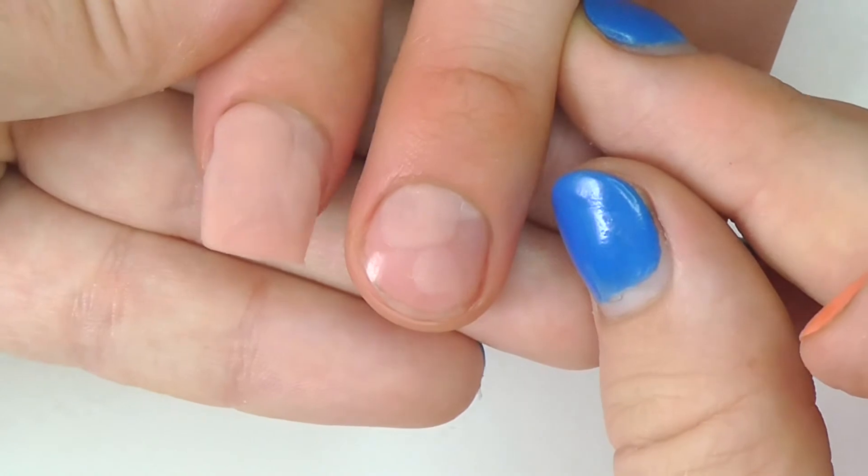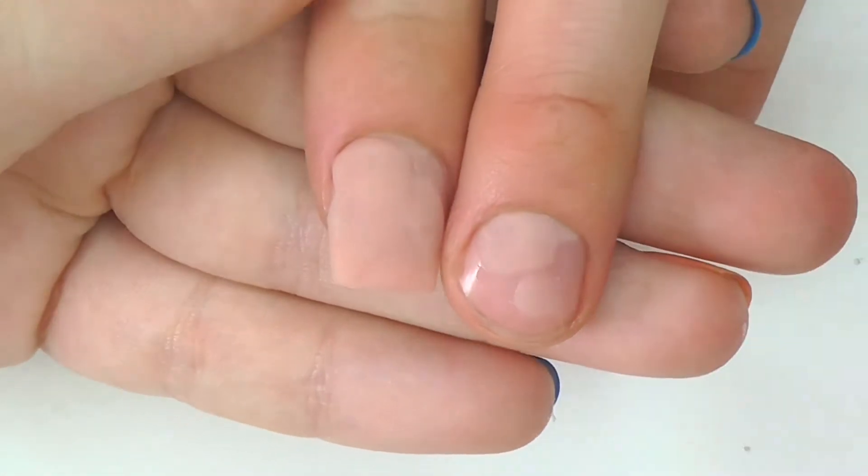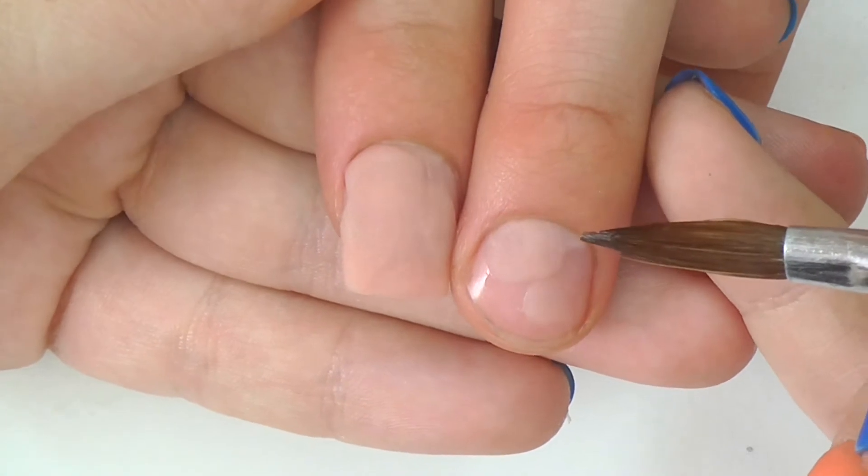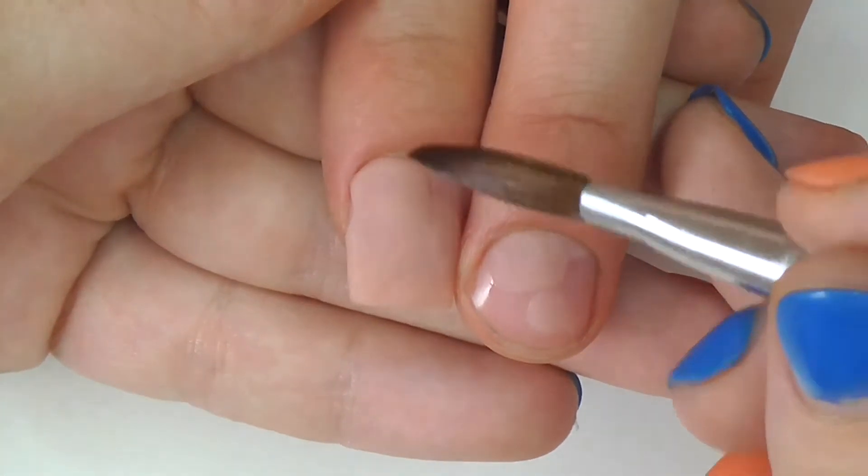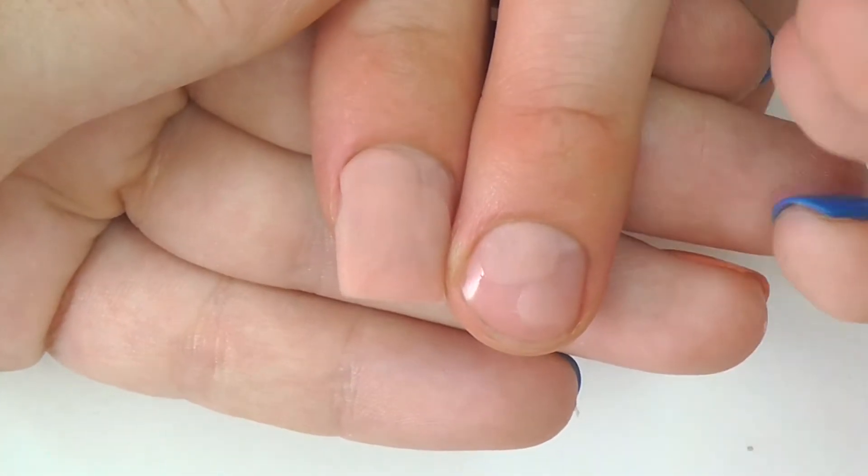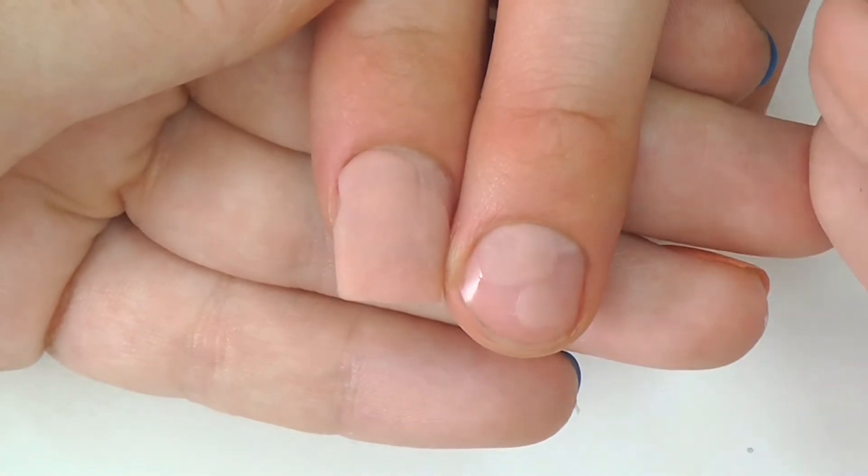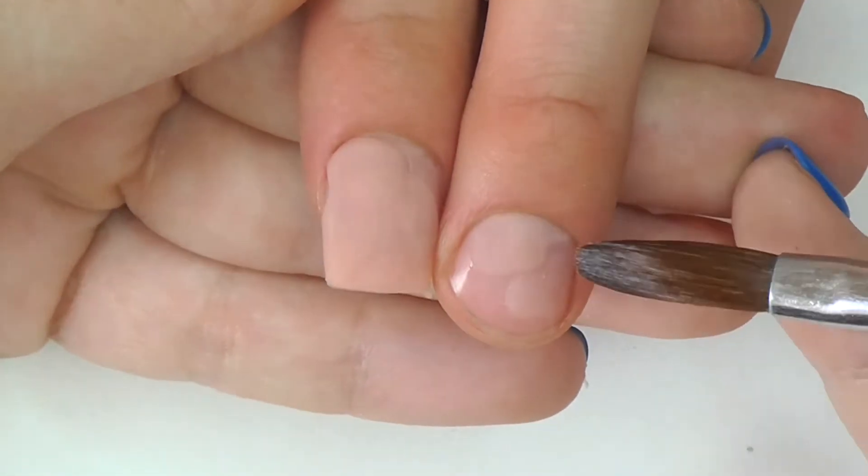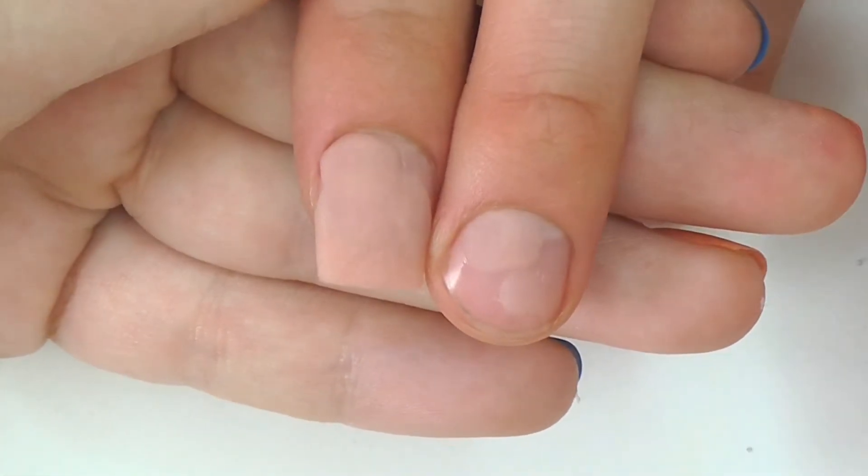So why is having flooding so bad? Because the thing is if you've seen our I think it was episode one of Friday Fudge Ups we filed back a thick cuticle application and it looked fine afterwards it looked natural and pretty so why can't we do that with our flooded nails and still have good results?